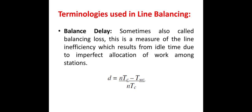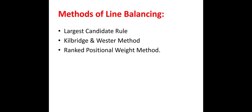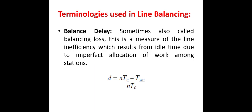The next terminology is balance delay. Balance delay is a measure of line inefficiency which results from idle time due to imperfect allocation of work among stations. It is practically impossible to obtain 100% efficiency of a line. It is denoted as D and is given by D equals NTC minus TWC, divided by NTC, where N is the number of workstations, TC is the cycle time or workstation time, and TWC is the total work content time, or the sum of elemental times.